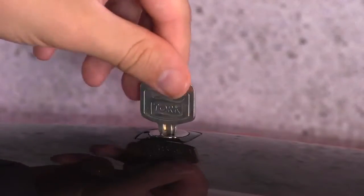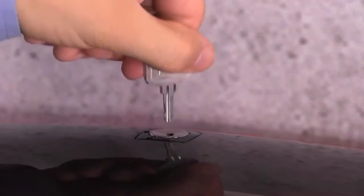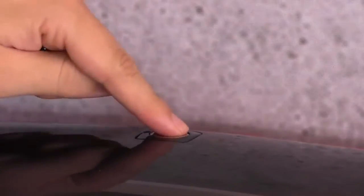To set the lock to push button mode, insert the key, turn counterclockwise to align with the circle, and remove the key.